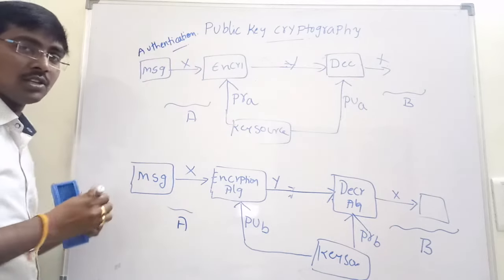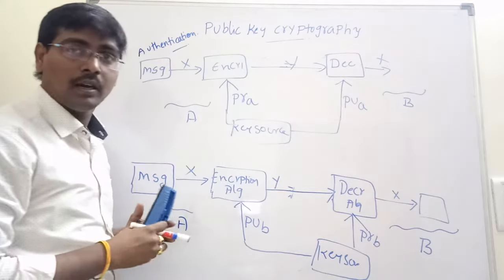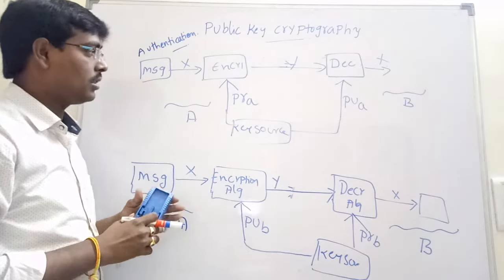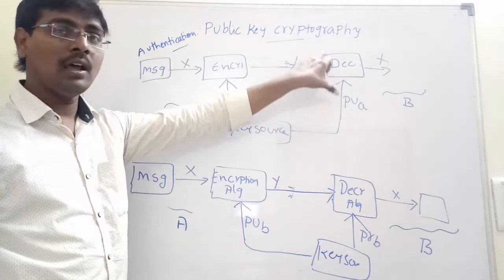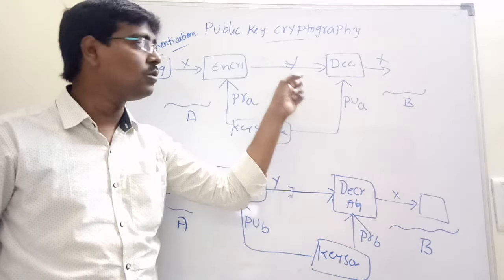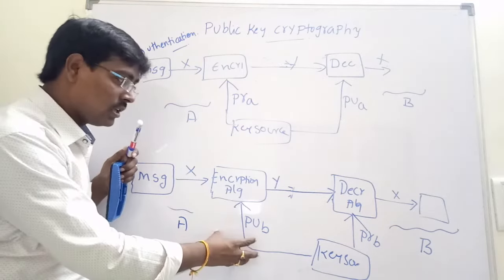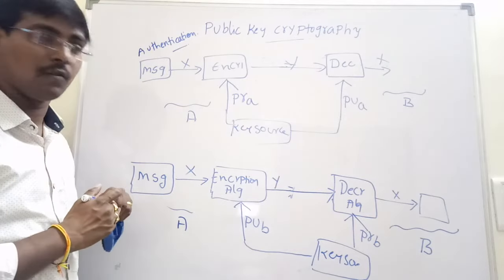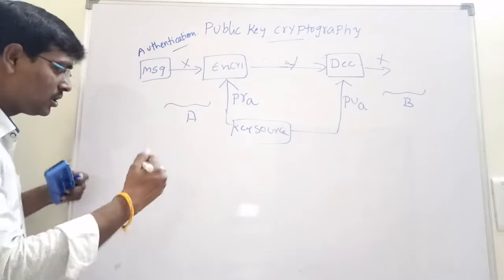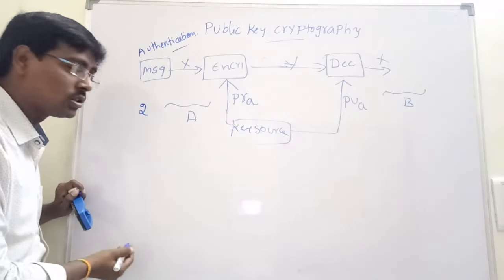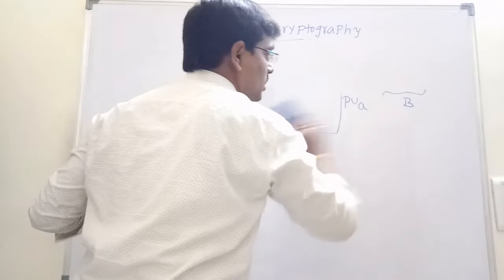This procedure is called authentication. Authentication means user A and user B are connected — one is the authorized person of the other. Here, B knows that the message is encrypted; all other users in the system do not know whether the message is encrypted or not. These are two types of encryption. In both cases we are using only a single pair of keys. If you want to perform confidentiality, perform two encryptions at the source side and two decryptions at the destination side.